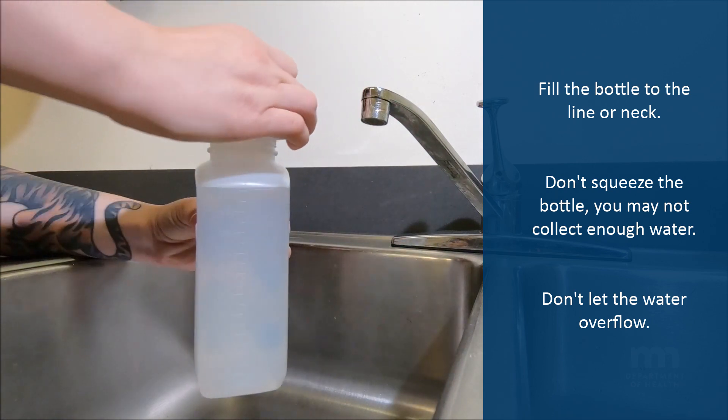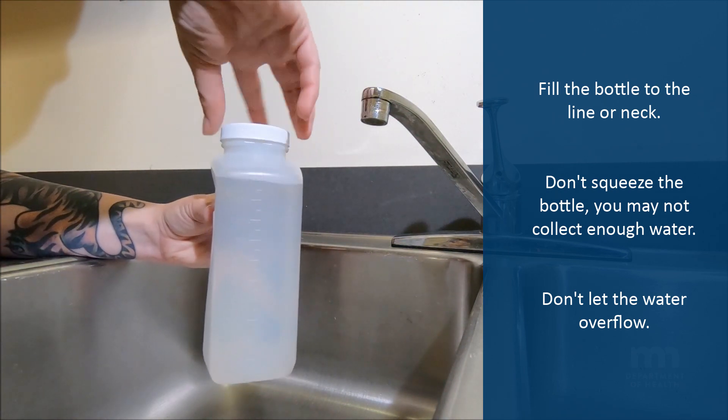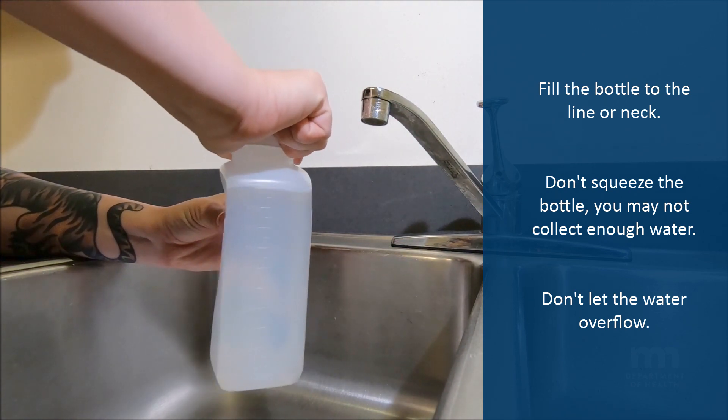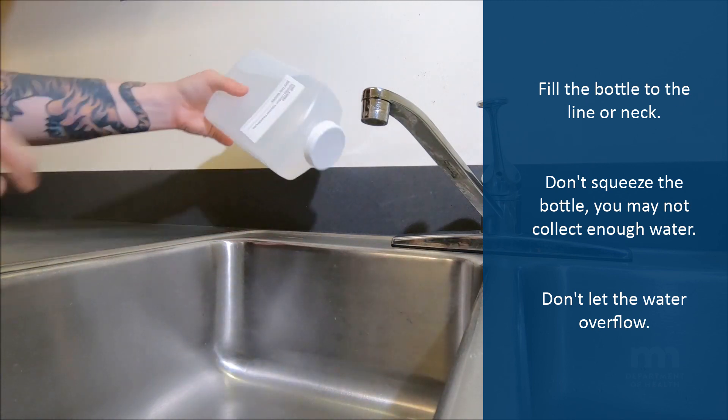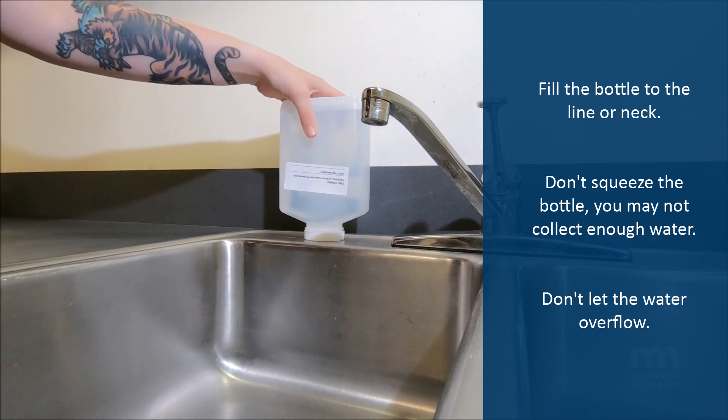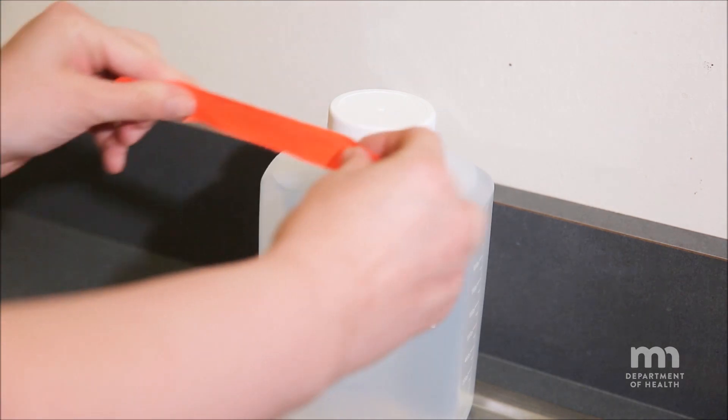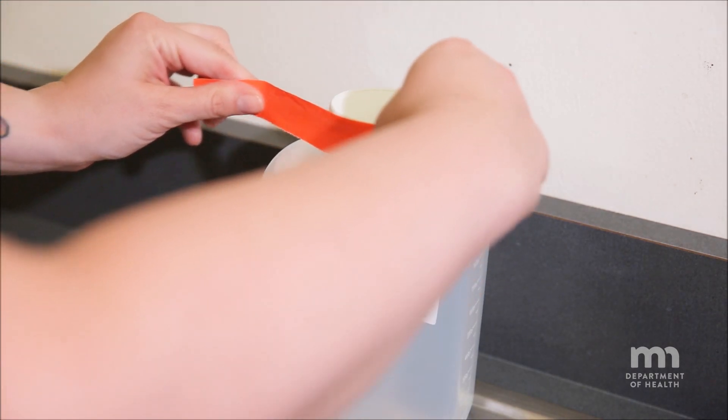Screw the cap back on the bottle. Make sure the cap is on securely. Turn the bottle upside down to make sure the water does not leak. You may tape the cap to seal the bottle.